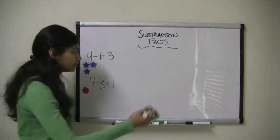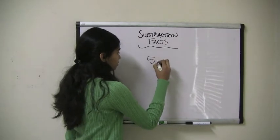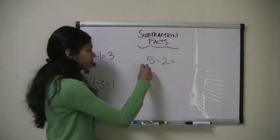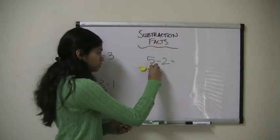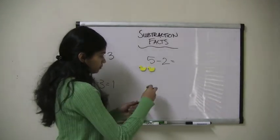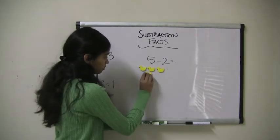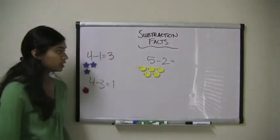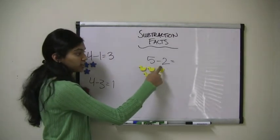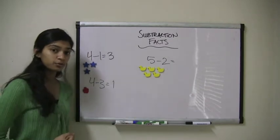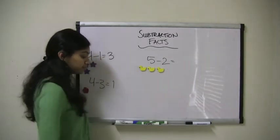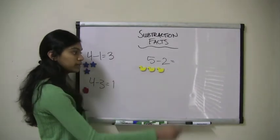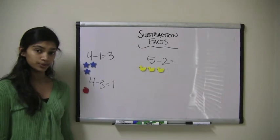So let's try another problem. Let's say we had 5 minus 2. So let's say I had 5 ducks: 1, 2, 3, 4, 5. And we have 5 take away 2. So I want to take 2 away from 5. So we'll go 1, 2. And now I only have 1, 2, 3 dots left. So 5 minus 2 equals 3.